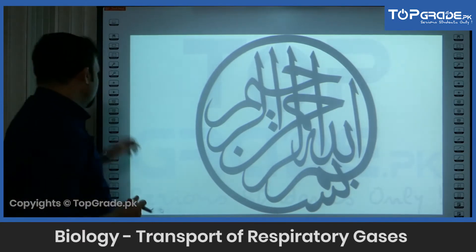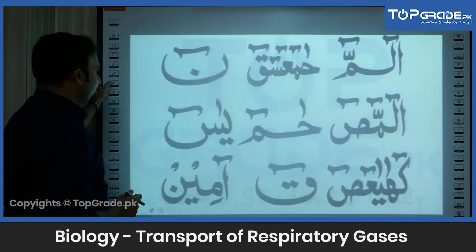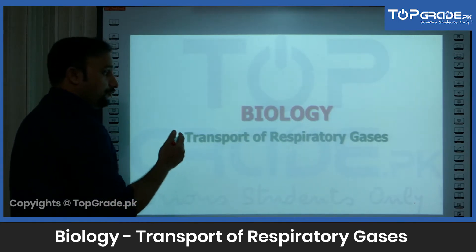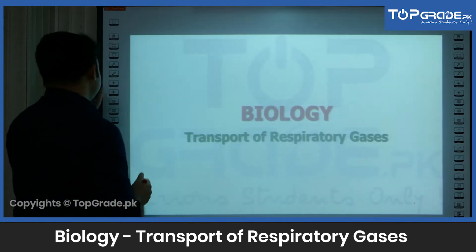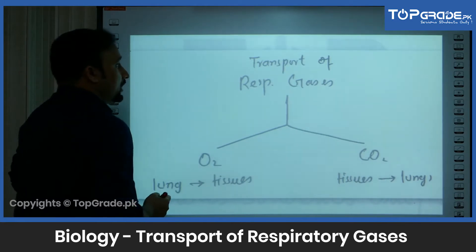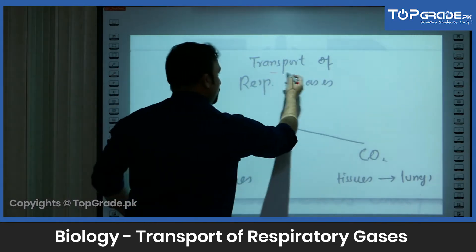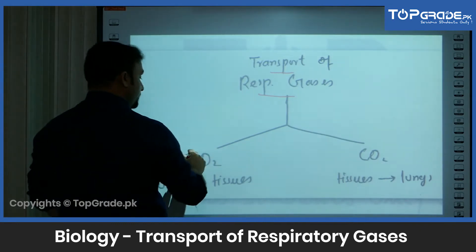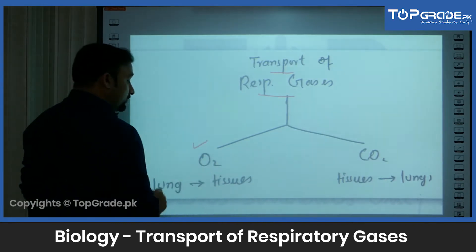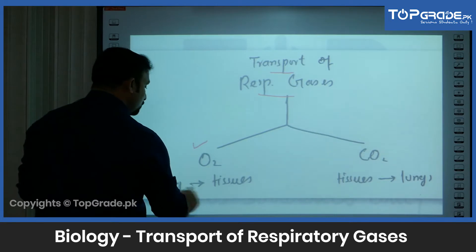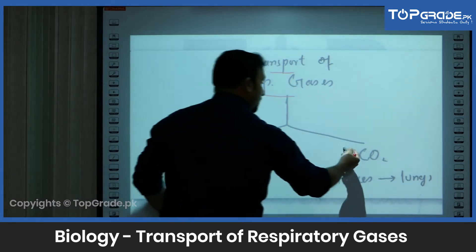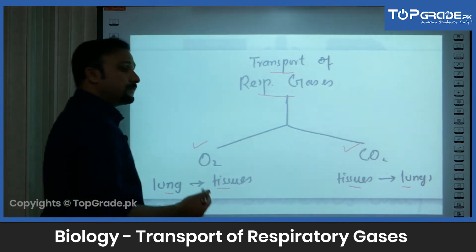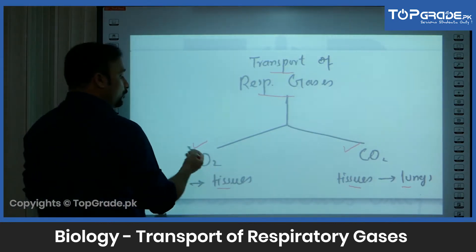Let's start our discussion with the next section, which is about the transport of respiratory gases. Basically, we have two gases in context: one is oxygen transport from the lungs to the tissues, and secondly, carbon dioxide transport from the tissues to the lungs. In this section, we will discuss these two areas in detail.